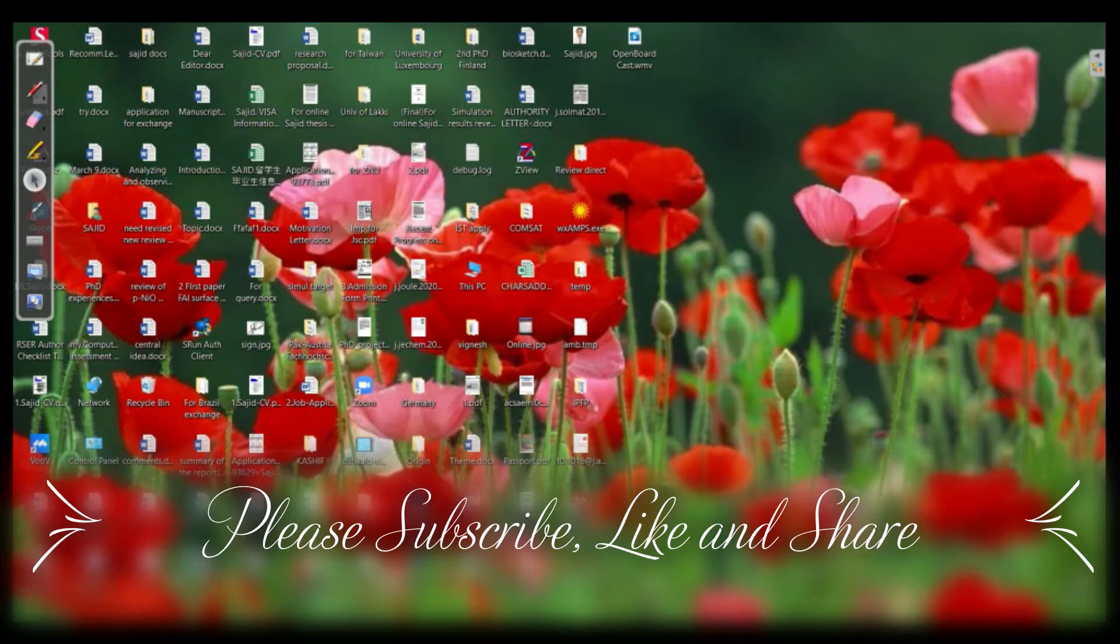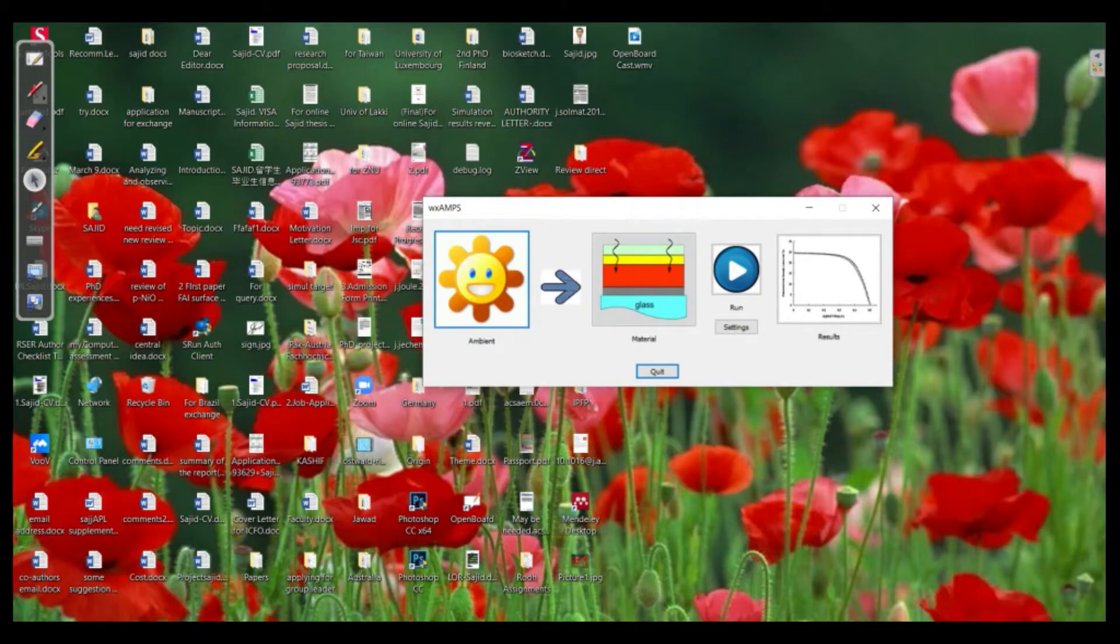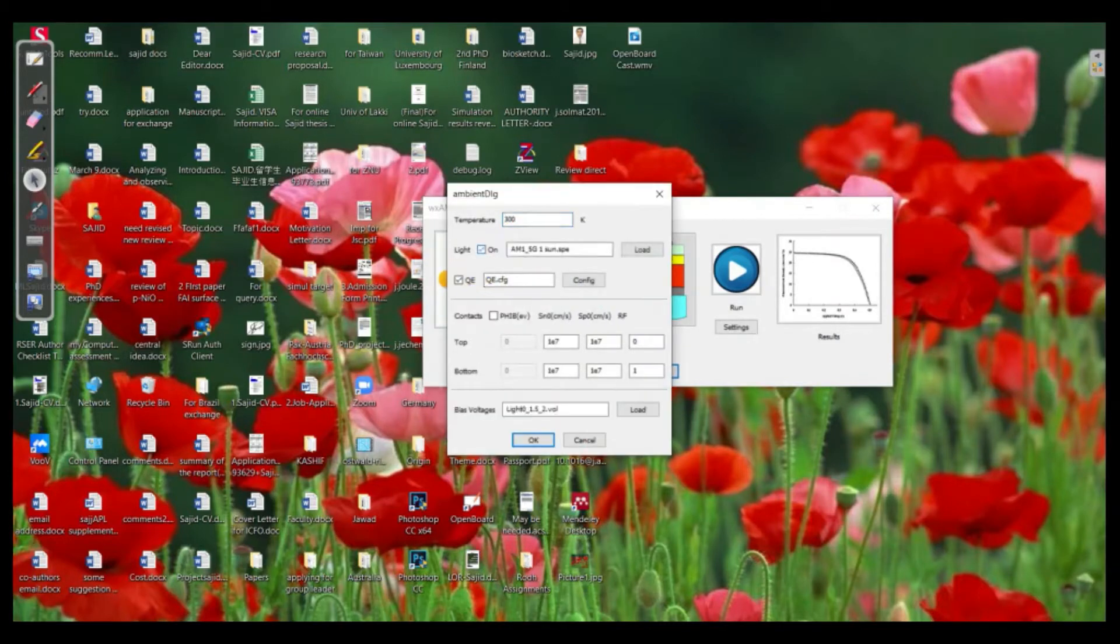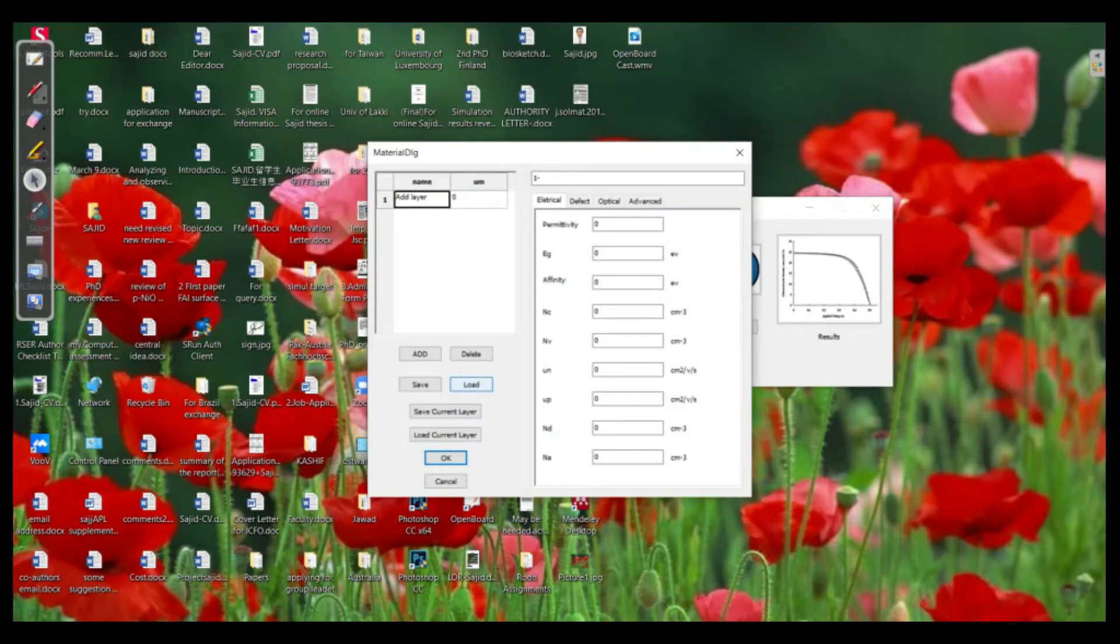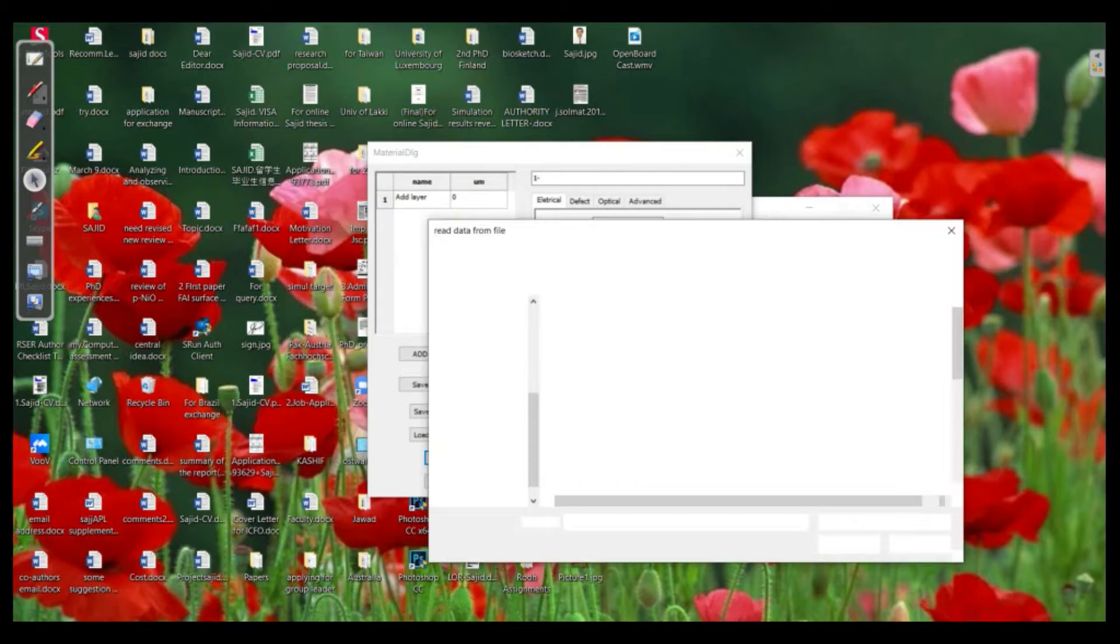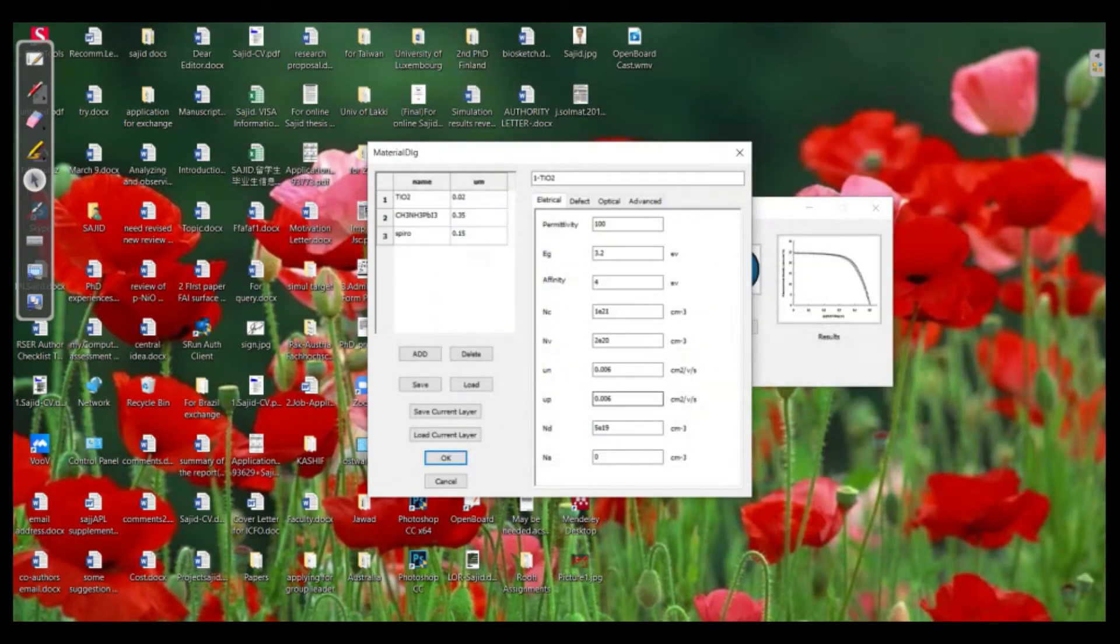Let's say we have our AMPS interface, then we need to check the ambient condition. Let me click OK and we need to upload our device which we have previously added. So we need to click load and the name of that device was first layer and we need to open. We need to check it that is the ETL Titania perovskite layer and Spiro, and then we have to click OK and run the simulation.